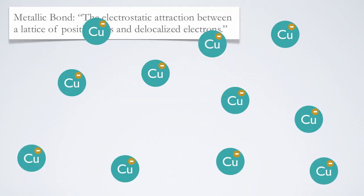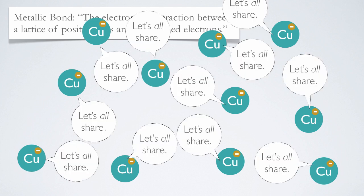Here we have a bunch of copper atoms, and like all metals, they have a medium electronegativity. So if the situation's right, they can be persuaded to give them up. When they all get together, they decide to share all their valence electrons.